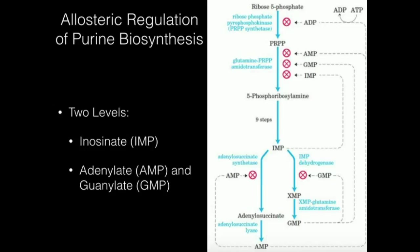I don't need to do purine synthesis because if I have high levels of AMP, GMP, or IMP, why make any more purines? So I'm going to shut off glutamine PRPP amidotransferase. AMP, GMP, and IMP will all inhibit this enzyme. Now, the second level of regulation is post-IMP, and that's at the first enzyme in each of the two branches — AMP and GMP.